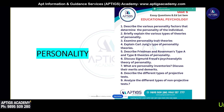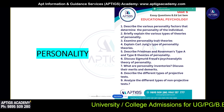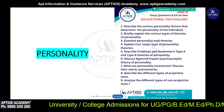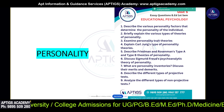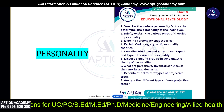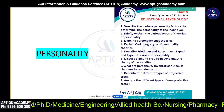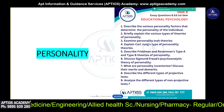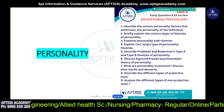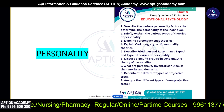One is traits theory. One is Carl Jung's theory. Explain Carl Jung's theory. Describe Friedman and Roseman's Type A and Type B theories of personality. Then discuss Freud's psychoanalytic theory of personality. What are the personality inventories? Discuss their merits and demerits. Then describe the different types of projective tests, and analyze the different types of non-projective tests.